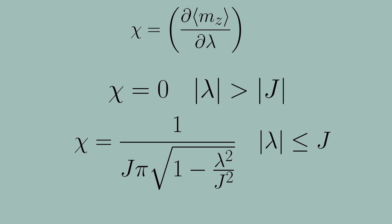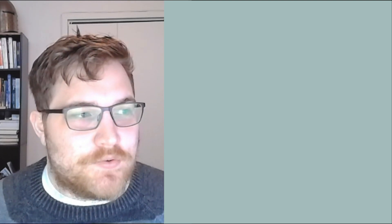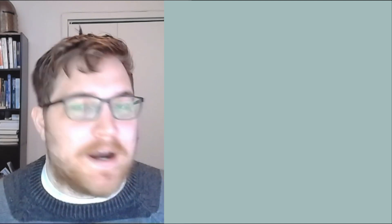When I say quantum phase transition, what I'm really saying is that the ground state fundamentally changed its properties or changed its phase. These phase transitions can only be accessed by varying a physical parameter which in our case was the magnetic field lambda.